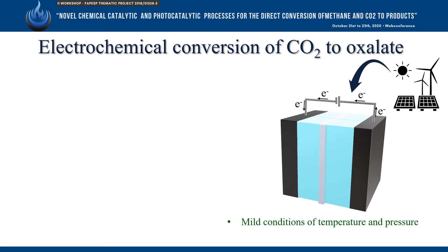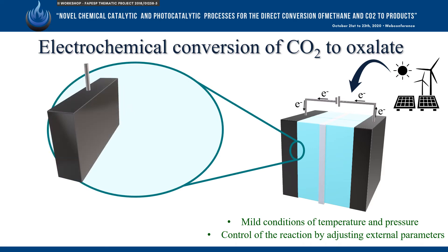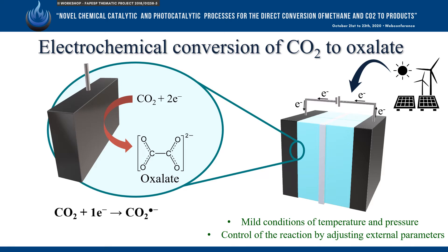This method can operate under mild conditions of temperature and pressure and allows control of the reaction by adjusting external parameters. In the electrochemical cell, the reduction of CO2 occurs at the cathode, and the formation of oxalate is given by the one-electron reduction of CO2 to its radical anion on the surface of the electrode, which dimerizes to form oxalate.